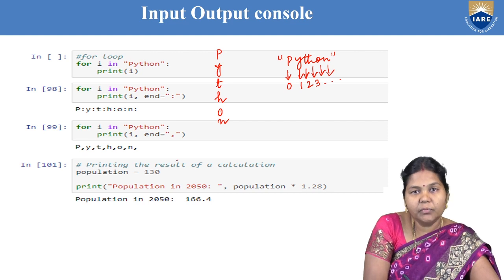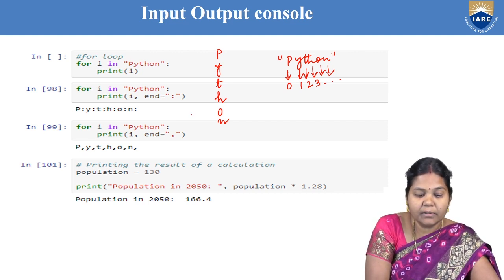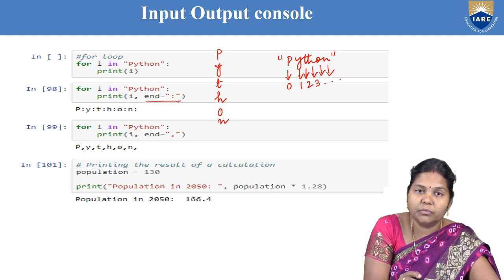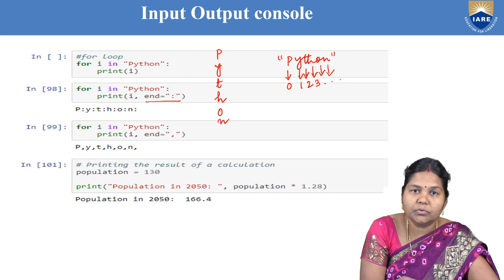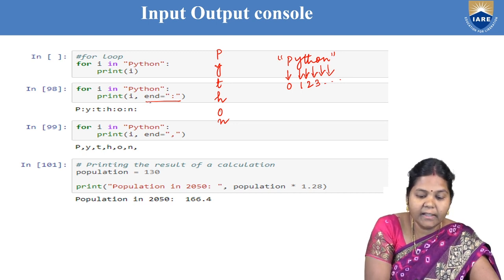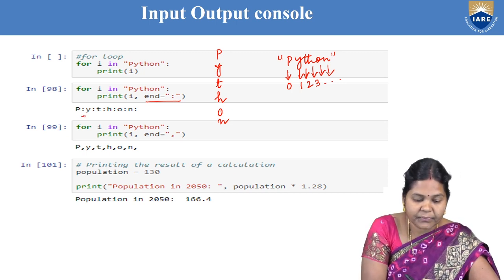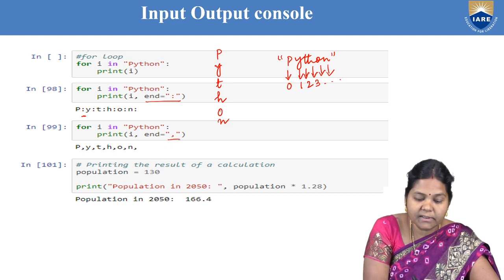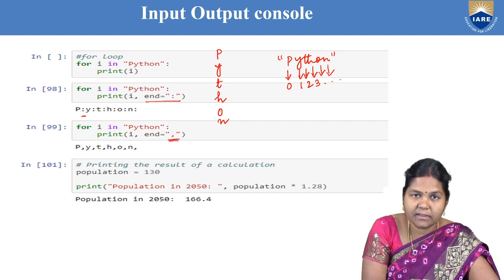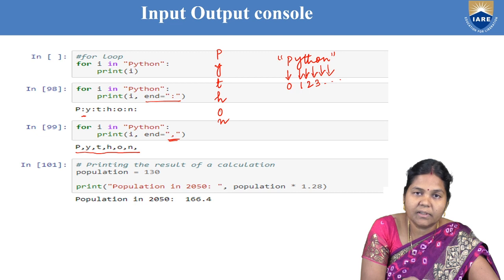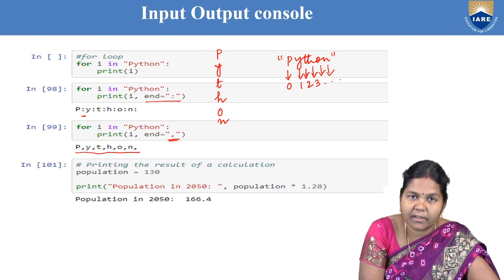Similarly, if you want to use an end value in the for loop, you can specify it. For example, with end equal to colon, after each character a colon will be printed, giving output like P:Y:T:H:O:N. If you want comma as the separator between characters, write end equal to comma, and each character will be separated by commas.